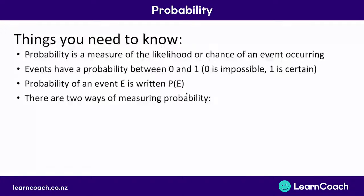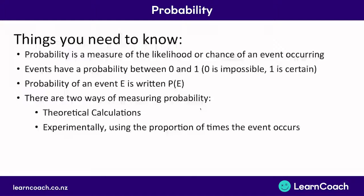There are two different ways we can measure probability, like we looked at in the coin tossing example. The first one is a theoretical calculation. We know there are two options which could happen — heads or tails — and in theory we'd expect them to happen half of the time. But in actual fact, we looked at an experimental probability, using the proportion of times that the tails actually occurred.